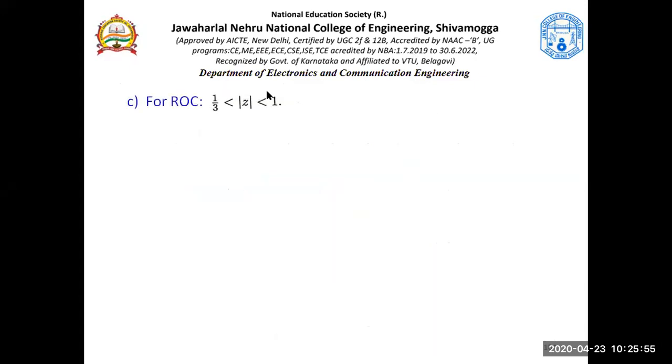Now let's see the third region of convergence. The third ROC says |Z| less than 1 and |Z| greater than 1/3. The first ROC was outside the circle with radius 1; the second ROC was inside the circle with radius 1/3. The third region of convergence is outside the circle with radius 1/3 but inside the circle with radius 1 — so it's a ring in the Z-plane. For what type of signals do we have a ring in the Z-plane? For double-sided time sequences, which have both negative time and positive time components.